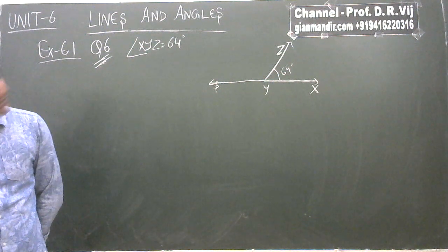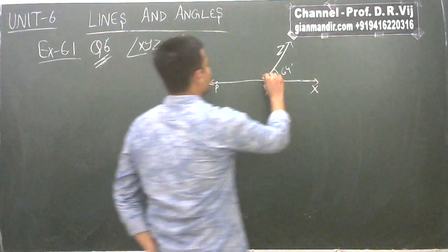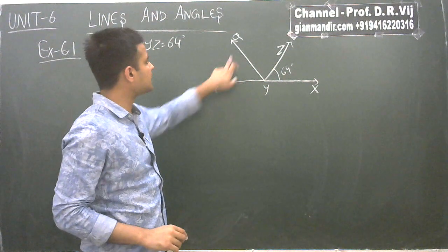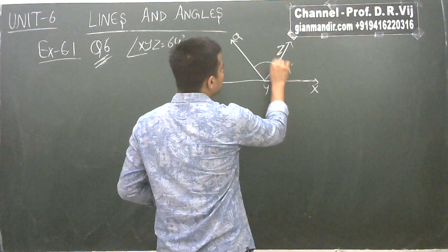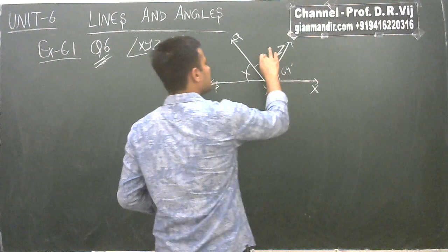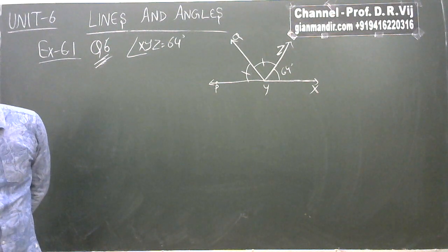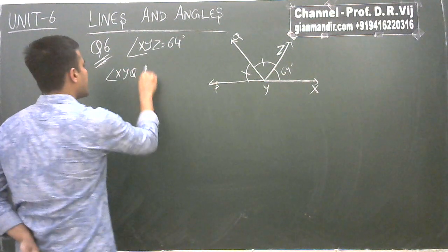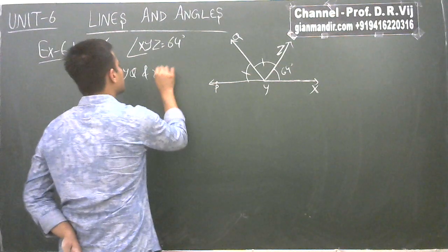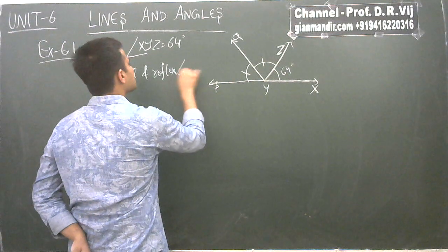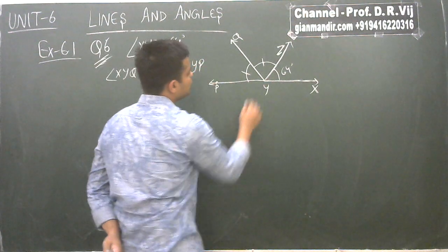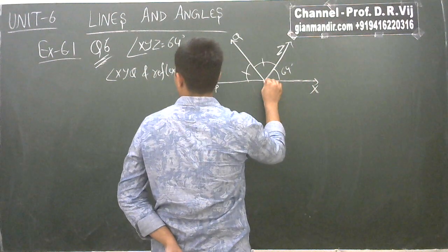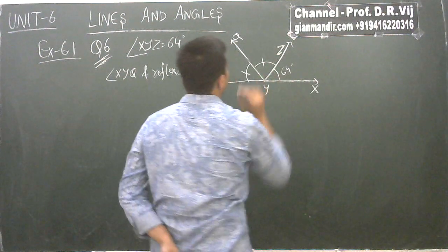If ray YQ bisects angle ZYP, that means the two angles formed on either side of YQ — angle ZYQ and angle QYP — are equal to each other. We need to find angle XYQ and reflex angle QYP.